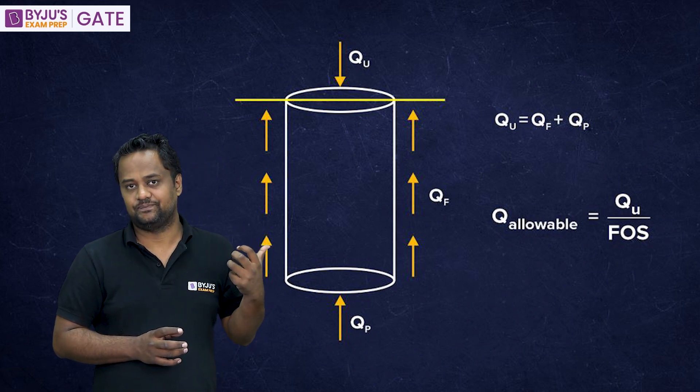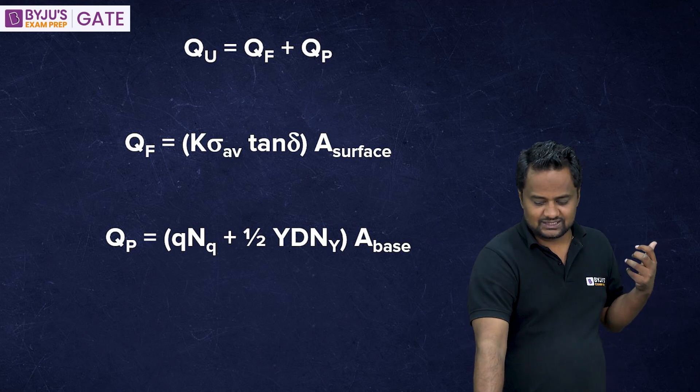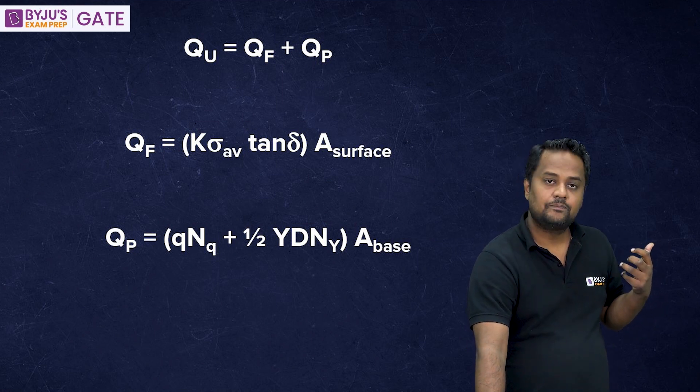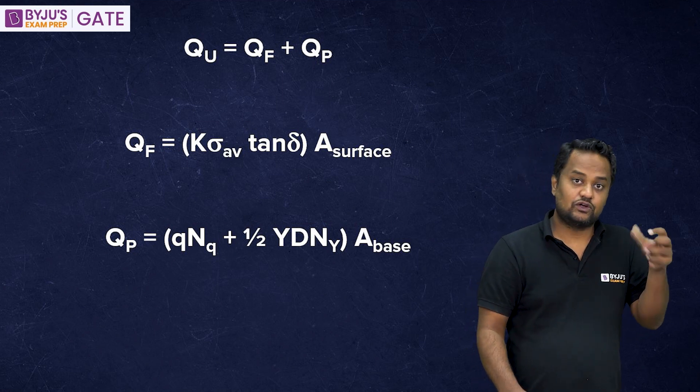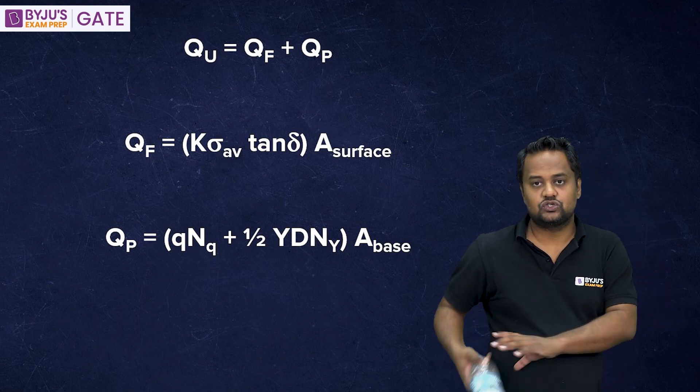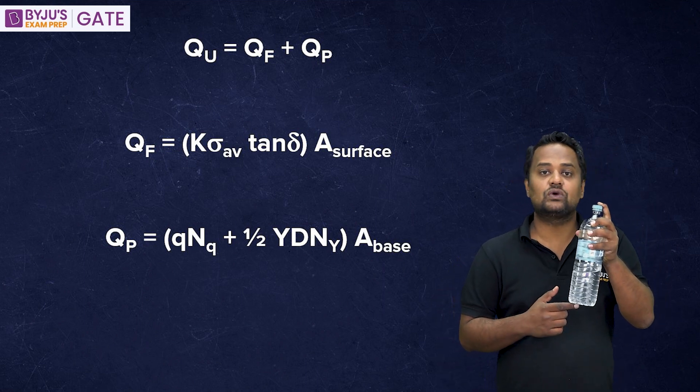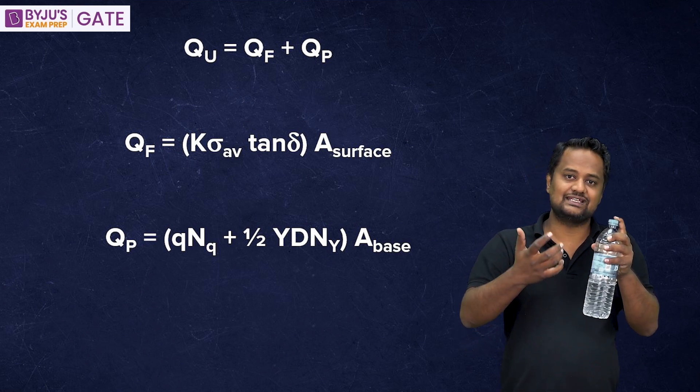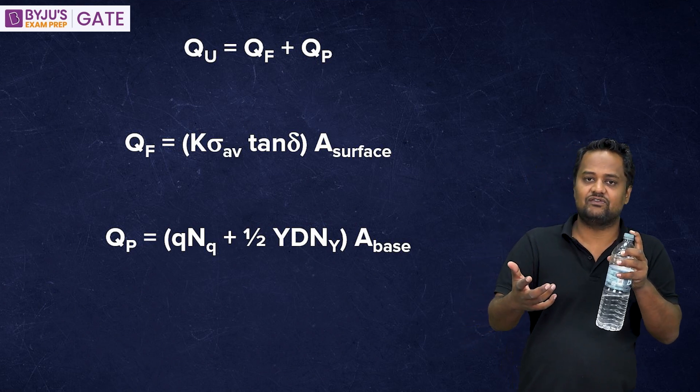For QP, the stress you can see in the figure for pile into the area. For QP, area will be area base because QP is at here. Similarly, QF is stress for sand. K, sigma average, tan delta. K, delta, every value will be given. Sigma average is the average effect of stress.